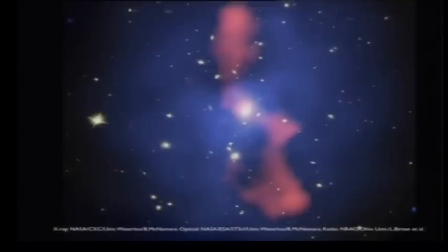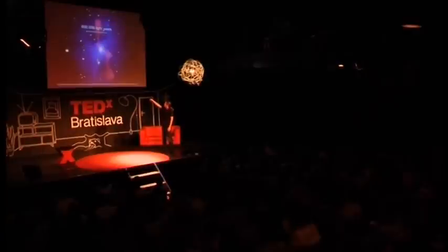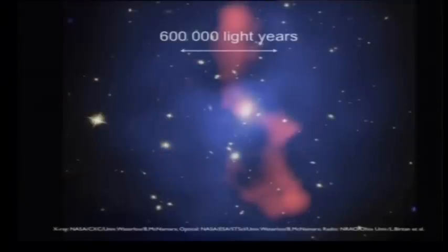But the processes which we see in the Perseus cluster or in the Virgo cluster are by no means extreme. Astronomers recently discovered a galaxy cluster which has bubbles 600,000 light years big. 600,000 light years is six times bigger than the disk of our Milky Way galaxy. And the energy in this structure is as big as 10 billion supernovae exploding at once. 10 billion stars exploding at once.